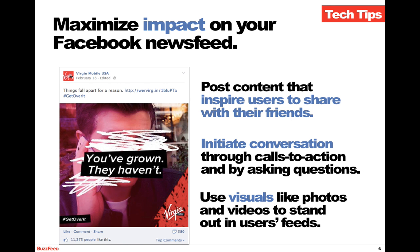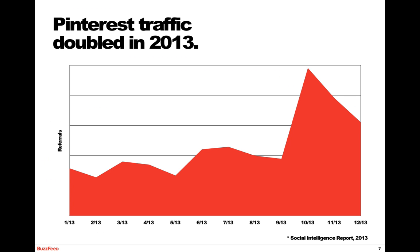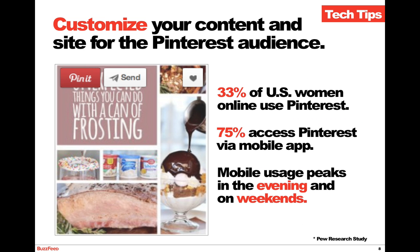Moving on from Facebook, another very important source of social traffic is Pinterest. Pinterest had a big year in 2013. According to the Social Intelligence Report, Pinterest traffic to publisher content in the BuzzFeed partner network grew almost 100% — it more than doubled. The biggest spike was around the holidays: Halloween, Thanksgiving, and Christmas. Knowing that Pinterest is now a valuable source of content, how do we make sure our content gets proper exposure? The answer lies in customizing your content for the Pinterest audience.